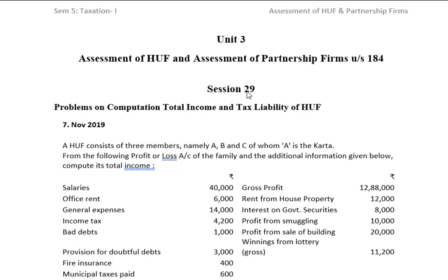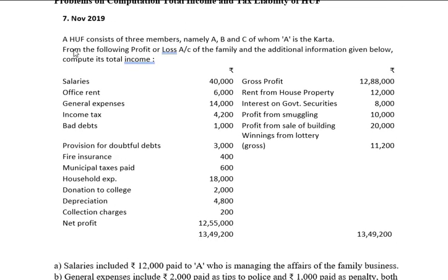Session 29 of Unit 3 of Taxation of 5th Semester BBA of Mangalore University. This is a problem given in November 2019. A HUF consists of three members, namely A, B, and C, of whom A is the Kartha. From the following profit and loss account of the family and the additional information given below, compute its total income.